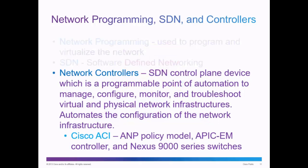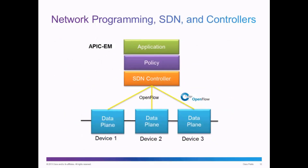The Cisco ACI, or Application Centric Infrastructure, is Cisco's approach to software-defined networking and network controllers. It involves three main things: an ANP, or Application Network Policy; an APIC, Application Policy Infrastructure Controller — in this case the APIC-EM, which is the Enterprise Module for APIC; and switches that are application programmable like the Nexus 9000 series switches. We can see how the Cisco APIC-EM, or Enterprise Module, is the SDN controller which sits between the Application and Policy and the Data Plane Devices.